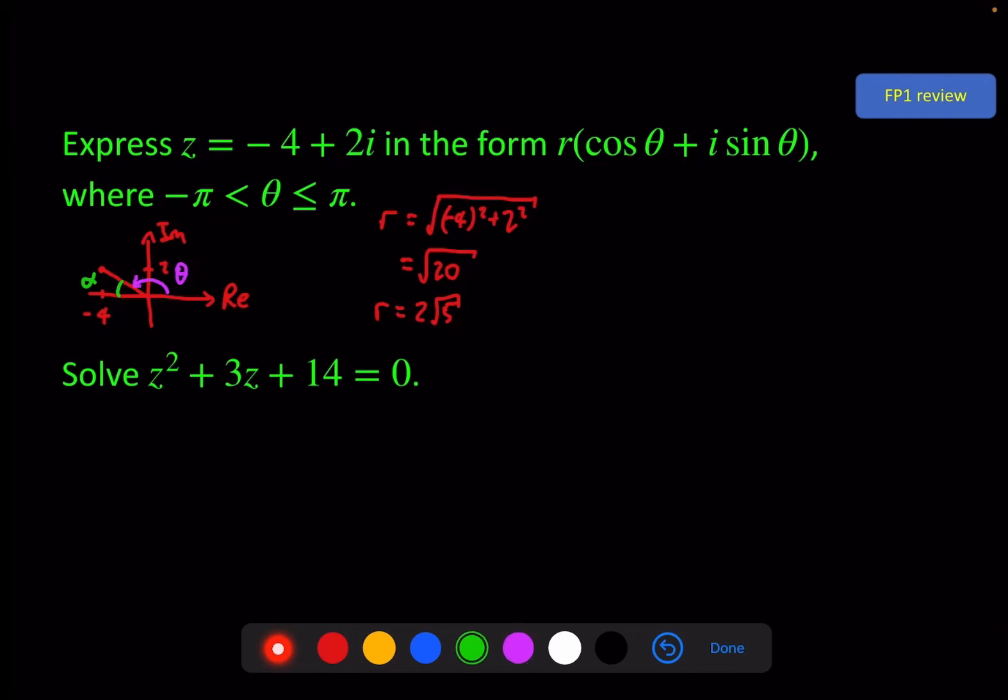So to do this, I need tan inverse of 2 over 4, and that gives me 0.4636..., and that is alpha.